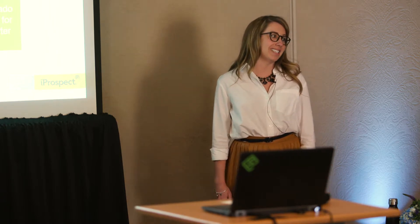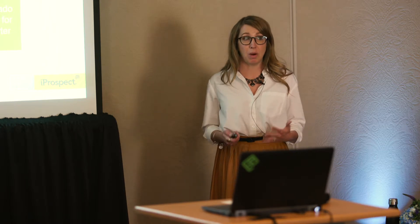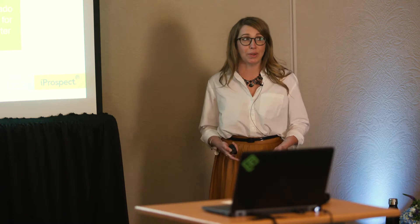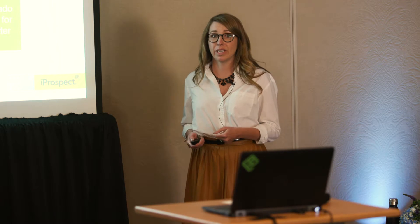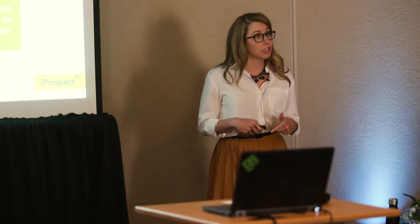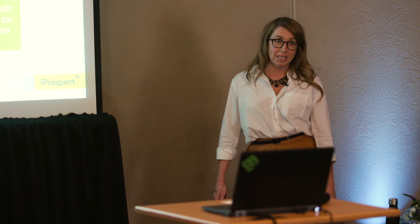We understand most of you would love a thousand completely customized creative assets, but most people just aren't there today. So how do we take this down to what you can start doing today? Think good, better, best. Demographic and geographic information is good — it's a great place to start; you can tailor your message based on location or weather data. When you start using in-market, category, and intent signals from Facebook, Google, and DMPs, you understand your consumer better. And finally, people-based targeting through M1 is where you can have a truly specific conversation.